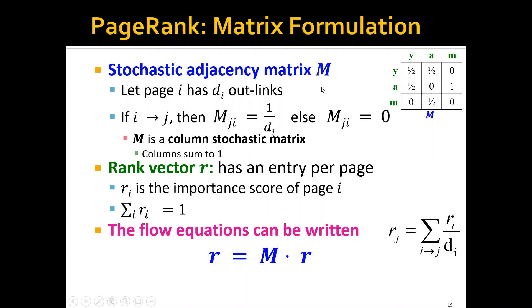Let's say that page i has di out-links. If i links to j, then Mji is equal to 1/di. You can see that this is equivalent to our flow formulation previously, where we split the votes from node i evenly to each out-link.